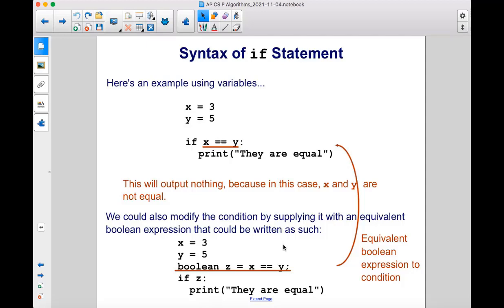We could also modify the condition by supplying it with an equivalent Boolean expression that could be written as such. So x is equal to 3, y is 5. Boolean z is going to be equal to true or false depending on this condition here. So in this case, since x is not equal to y, z is going to be assigned the value of false.